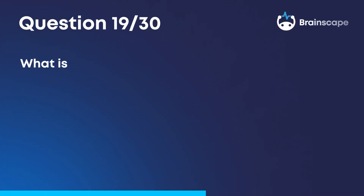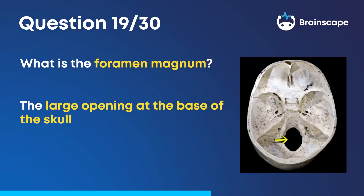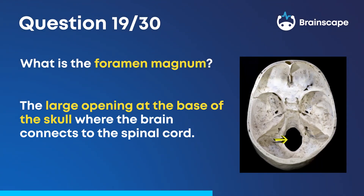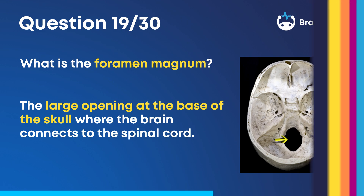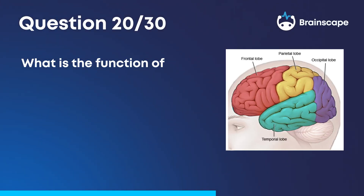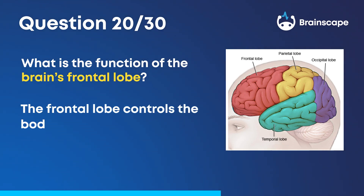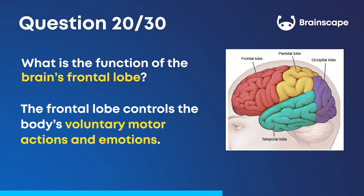Question 19. What is the foramen magnum? The large opening at the base of the skull where the brain connects to the spinal cord. Question 20. What is the function of the brain's frontal lobe? The frontal lobe controls the body's voluntary motor actions and emotions.